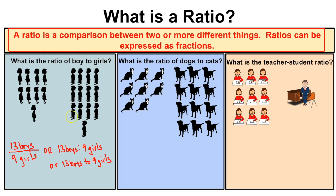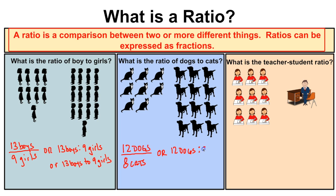A ratio is a comparison between two different things. If we take a look here — what is the ratio of dogs to cats? Counting up all the dogs we have 12 dogs, and we have 8 cats. So our ratio of dogs to cats is 12 dogs to 8 cats, or we can write 12:8.